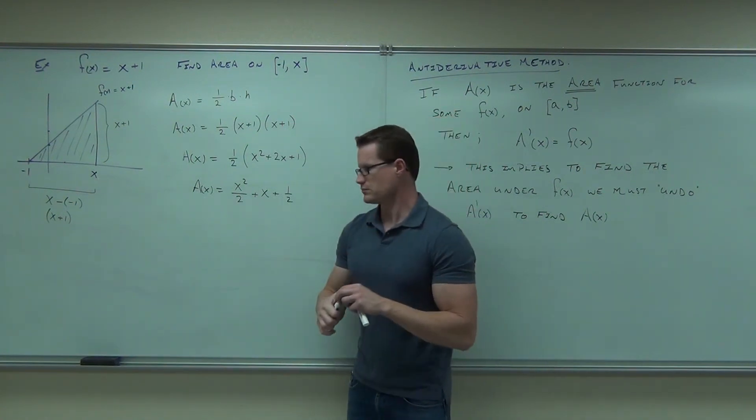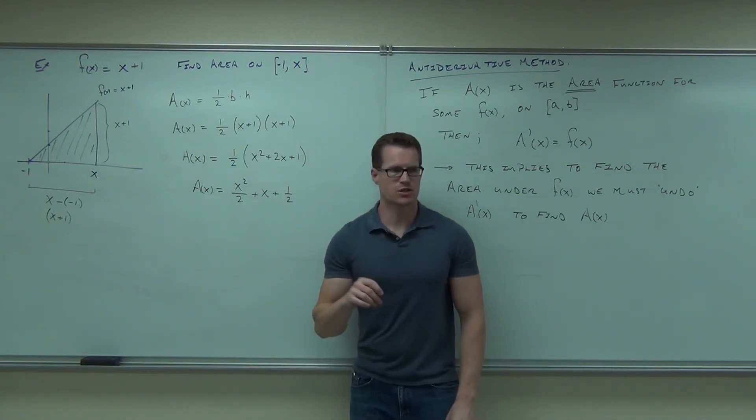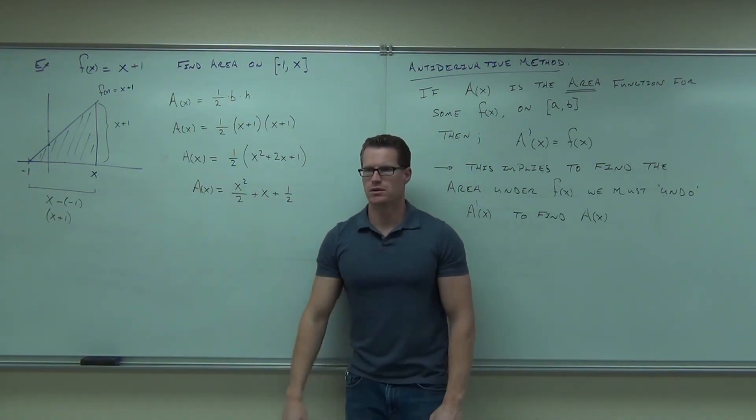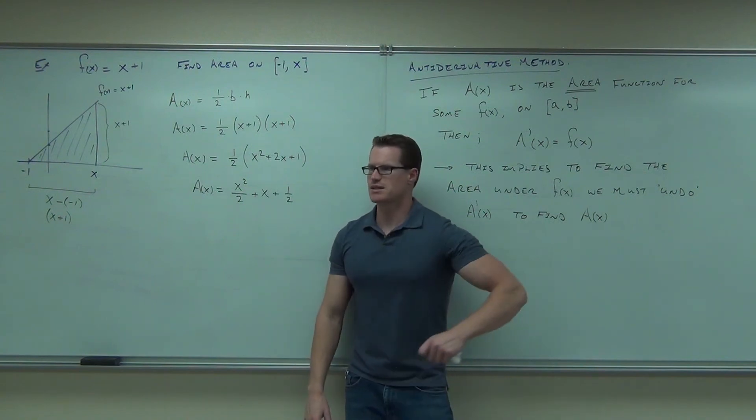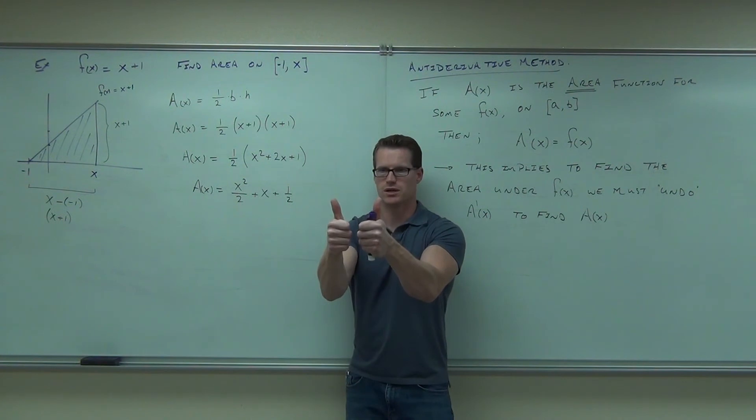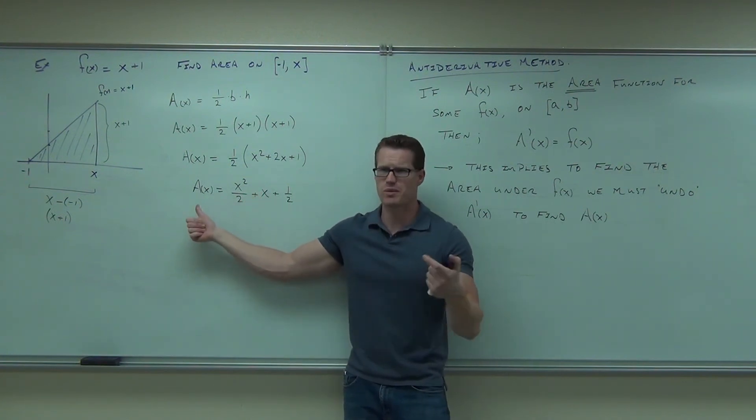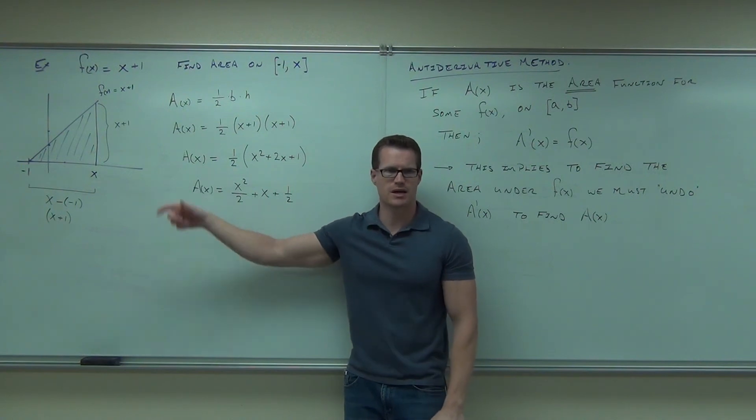I'm just kind of proving this for you with an example. It's not a genuine proof, but I'm showing you that it does work. If I distribute this, I'm going to get, let's see, one half. That's x squared plus 2x plus 1. Do you believe me? You should because that's right. Come on now. If I distribute the one half even further, I get x squared over 2 plus x plus one half. You follow me with that so far? Okay.